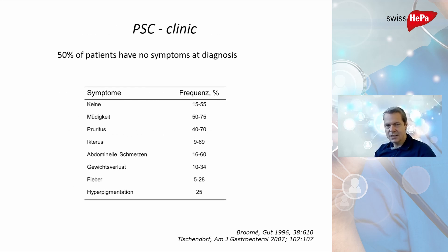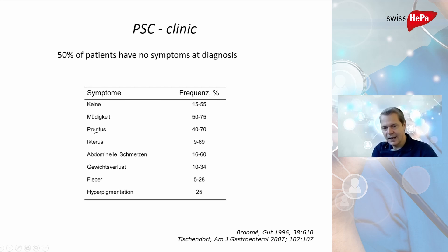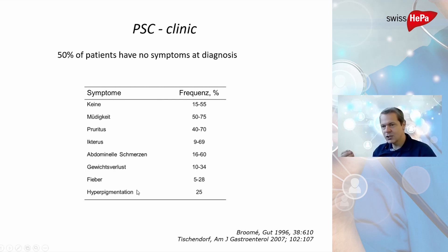Regarding clinical presentations: 50 percent of patients have no symptoms. About half of patients have fatigue, half to 70 percent have itching (pruritus), up to 69 percent have yellow skin called icterus. Many patients also have abdominal pain, weight loss, fever, and hyperpigmentation — meaning the skin develops a somewhat brownish character.